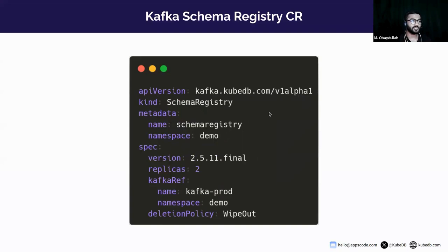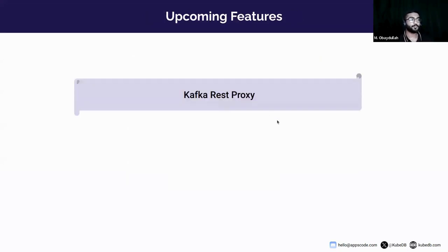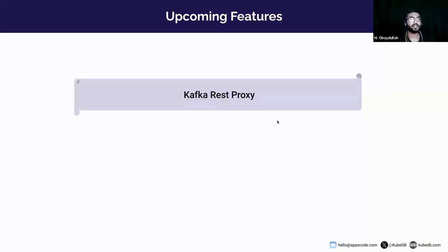This is our Kafka schema registry upcoming features section. First, Kafka REST Proxy — it provides REST API endpoints so you can produce or consume messages using HTTP REST APIs without needing to create any programming-language-based client. Currently Kafka is running in SSL plain mode, and in our next release we will add support for Kafka SCRAM login. Also, currently in schema registry we are using Apicurio registry, and we will add support for Ibyn in our next releases.